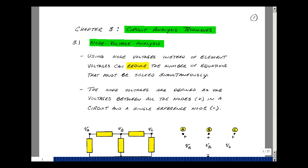In this chapter we take a look at a couple techniques for reducing the number of equations we have to write to solve for the response of a circuit. By using node voltages instead of element voltages we can reduce the number of equations that we have to solve simultaneously.